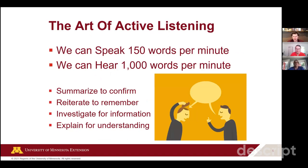Here are some numbers from a university study. We can speak about 150 words per minute, but we can hear 1,000 words per minute — a huge difference in how much we can understand versus how much we can speak. Some summaries on active listening: summarize to confirm, reiterate to remember. This repetition is important for both remembering and confirming the other individual heard what they were saying. Investigating for information and explaining for understanding — the importance of two-way communication is another key takeaway.